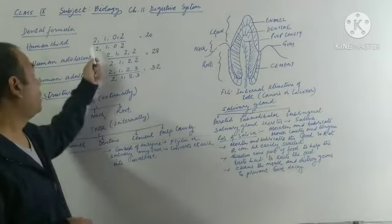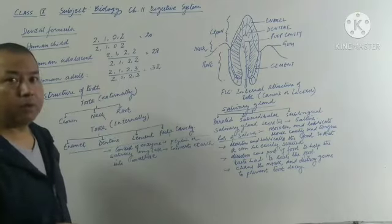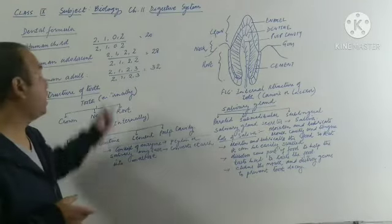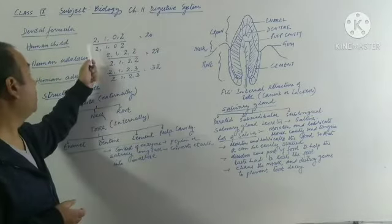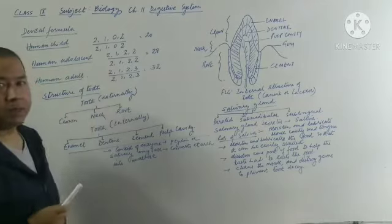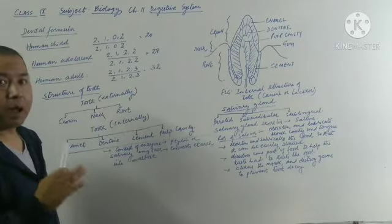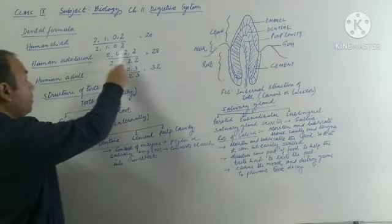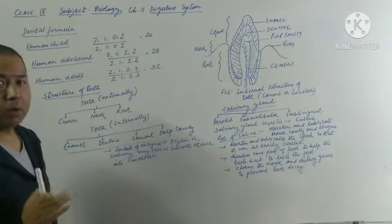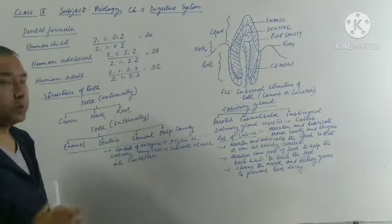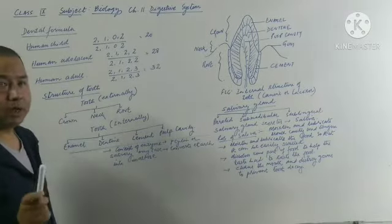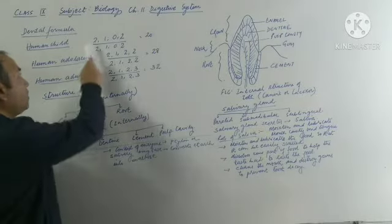In a human child, in the lower jaw there are four incisors, so if you take half it will be two. The upper number in the dental formula represents the number of teeth present in half of the upper jaw, and the lower number represents the number of teeth in half of the lower jaw. In the half of the upper jaw in children, two incisors are present.